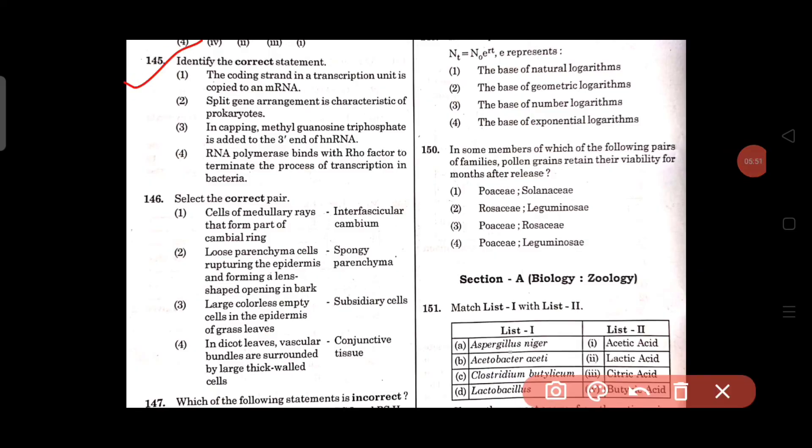Question number 145: Identify the correct statement. The coding strand in a transcription unit is copied to an mRNA. Split gene arrangement is characteristic feature of the prokaryote, this is wrong. In capping, methyl guanosine triphosphate is added to the 3' end of the hnRNA, this is also wrong. RNA polymerase binds with rho factor to terminate the process of transcription in bacteria, this one is right. The correct statement is option number 4.